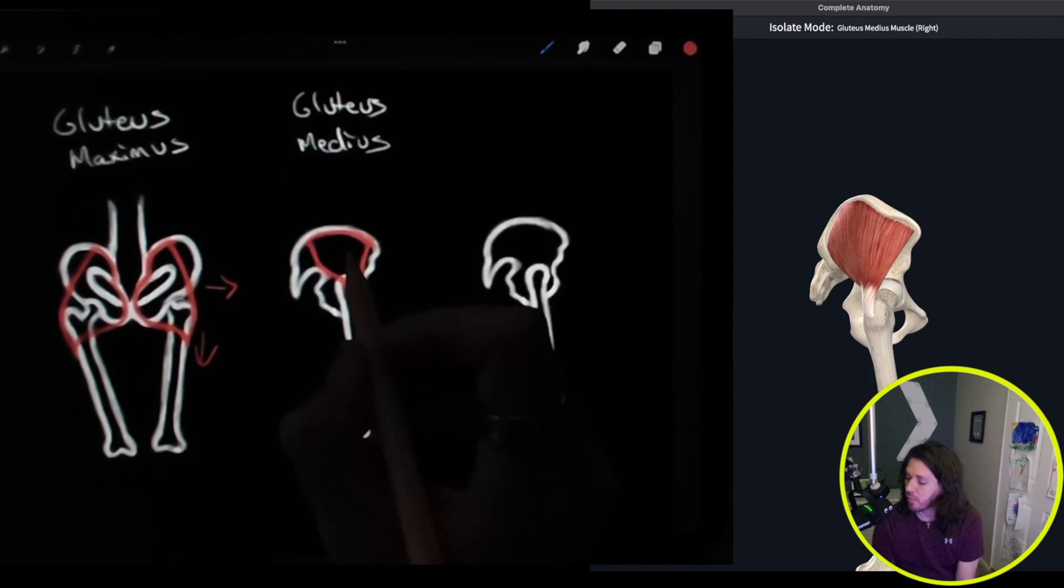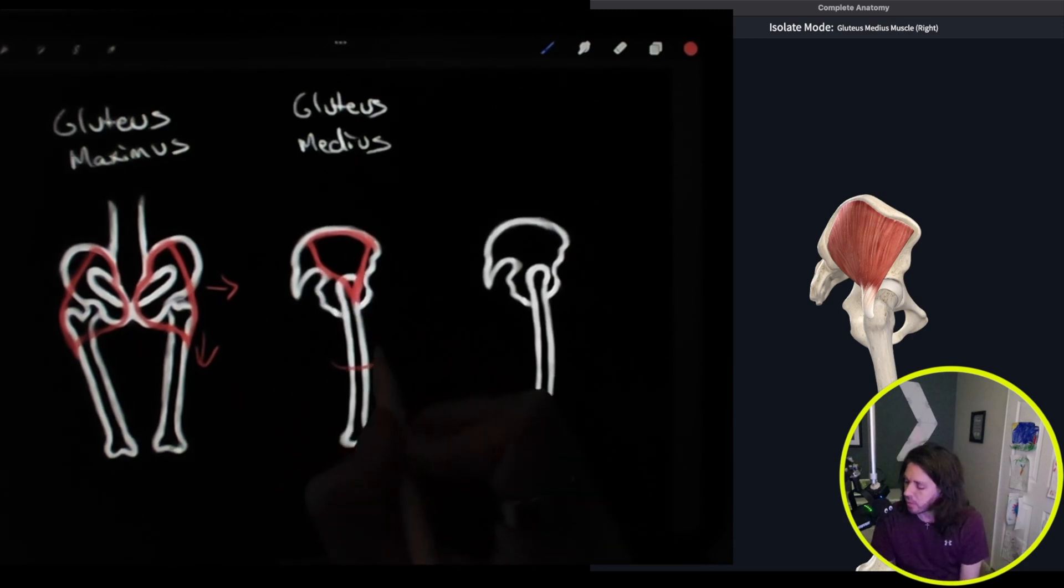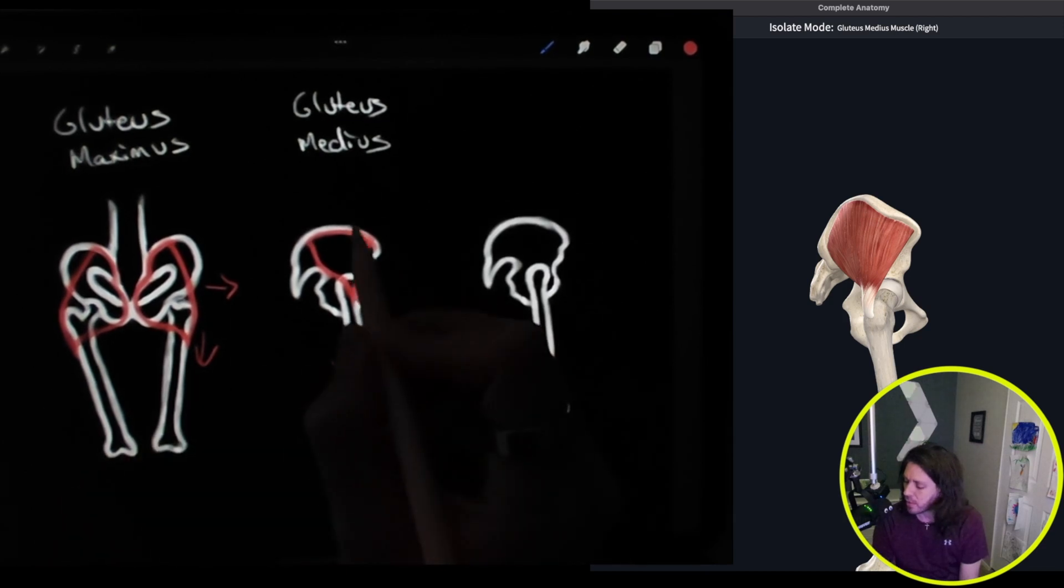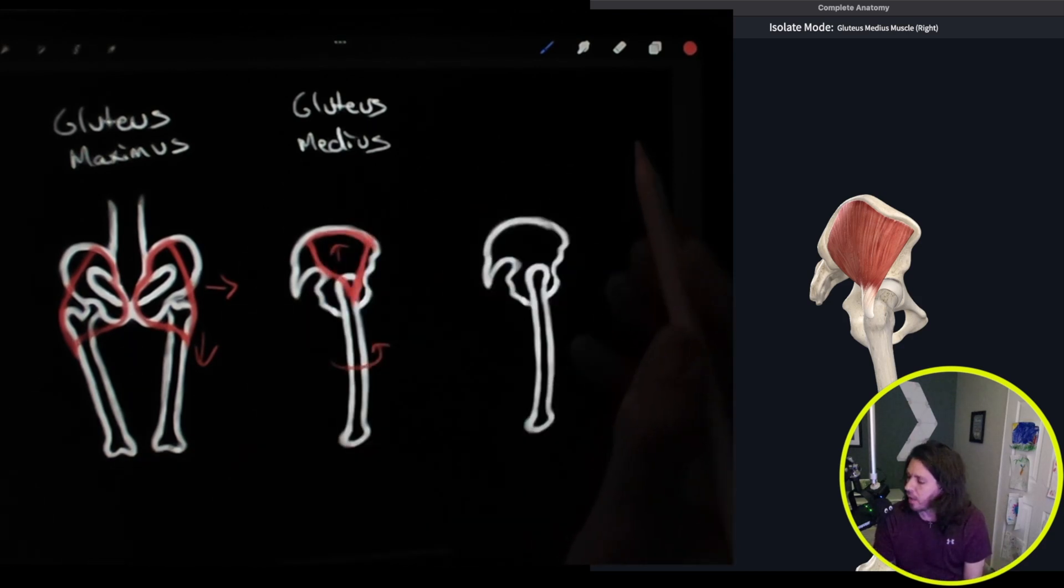And as far as movement here, it is also in charge of abduction, so moving the leg up. And it also does rotation, it moves the femur in toward the body. So I'll represent a twisting motion and then moving the femur out, or pulling it up from the side view.